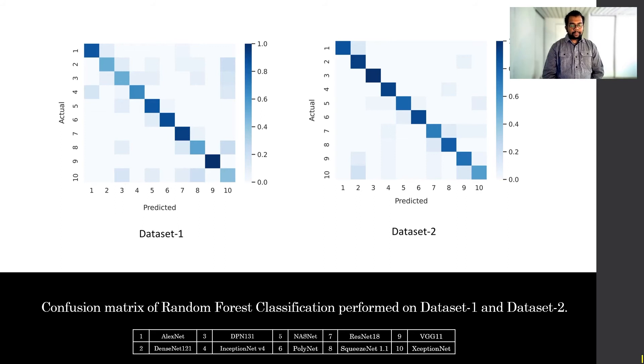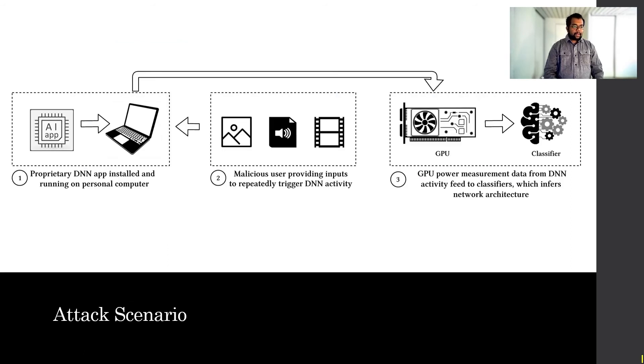Here is the confusion matrix of random forest classification performed on dataset 1 and dataset 2. I have marked the labels here with numbers, and here are the corresponding architecture names with the numbers. You can see that dataset 2 performed very well.